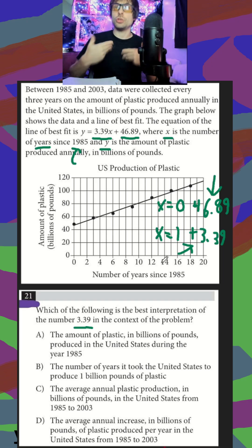We know looking through our answers, we're looking for it to be in amount of plastic, not in years. So in A, the amount of plastic, good start, produced in the U.S. during 1985. A is actually describing our y-intercept, not our slope.